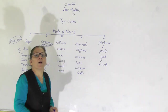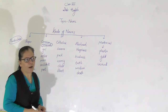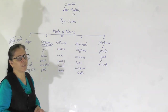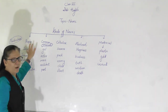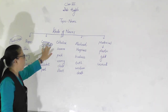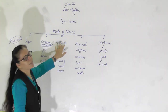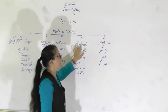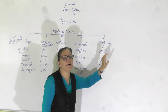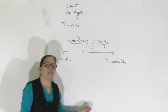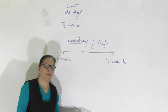So dear children, have you understood the different kinds of nouns? The different kinds of nouns are: proper nouns, common nouns, collective nouns, abstract nouns, and material nouns. Now let us move ahead.